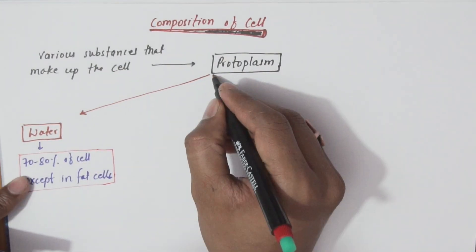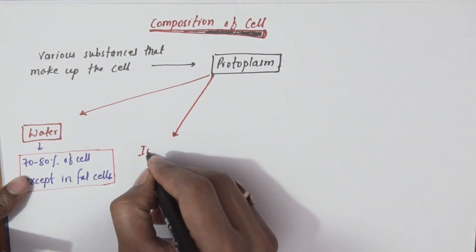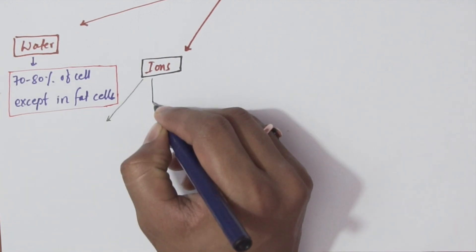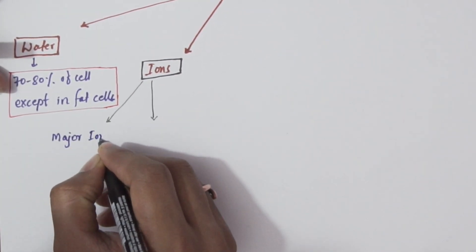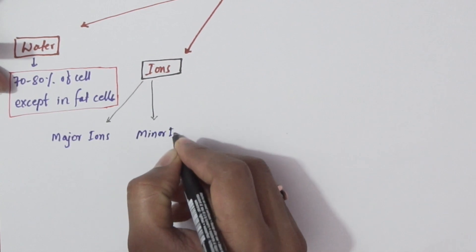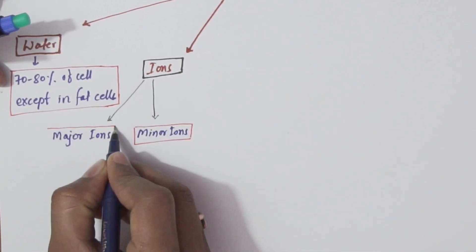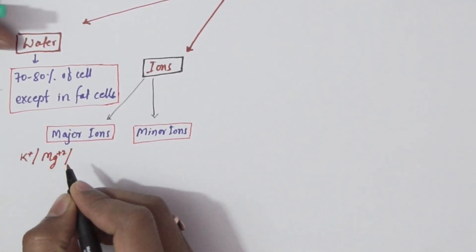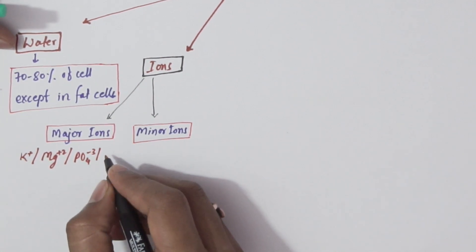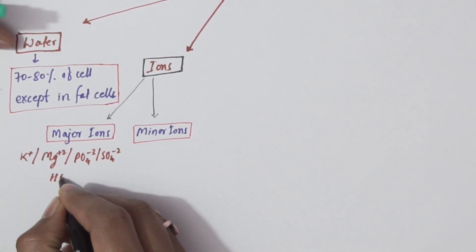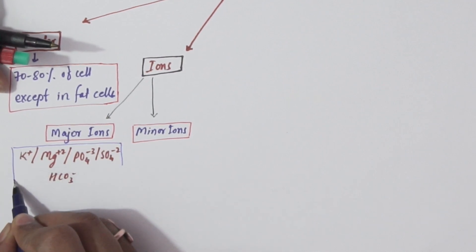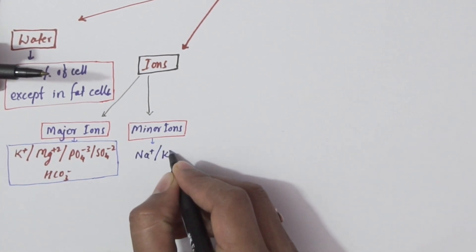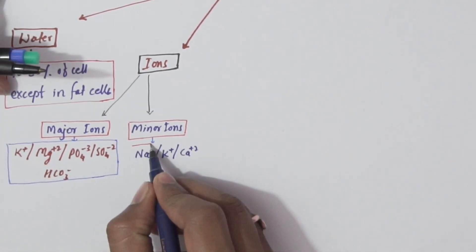The second composition is ions, which may be present in large quantity as major ions or in lesser quantity as minor ions. Examples of major ions include potassium, magnesium, phosphate, sulfate, and bicarbonate. Minor ions include sodium, chloride, and calcium.